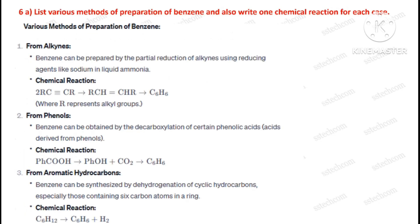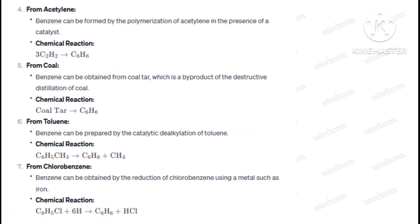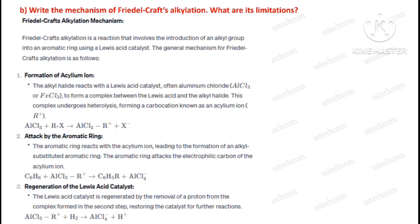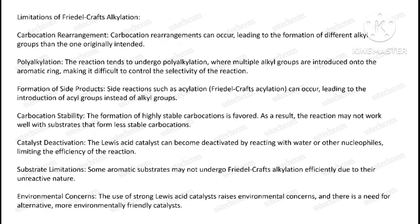Question number six, part A: List various methods of preparation of benzene and also write one chemical reaction for each case. Part B: Write the mechanism of Friedel-Crafts alkylation and discuss its limitations.